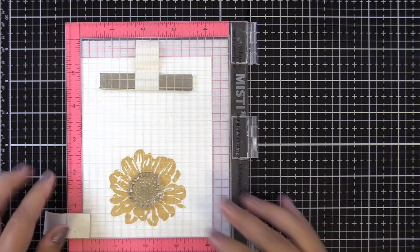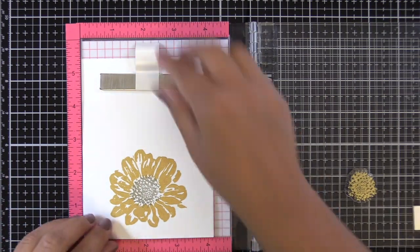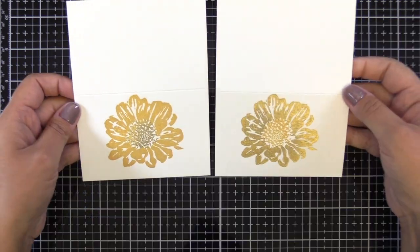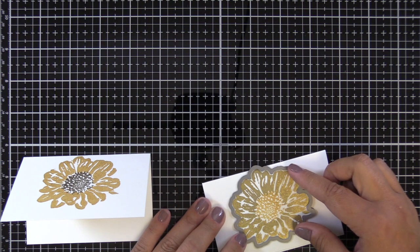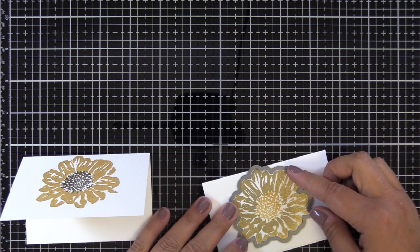So I have both of those here and you can see the difference in the color variation. One is a cool gold and the other one is a warmer gold. So I'm going to take the die, the coordinating die, and I'm going to set it just right off the top of the edge here.